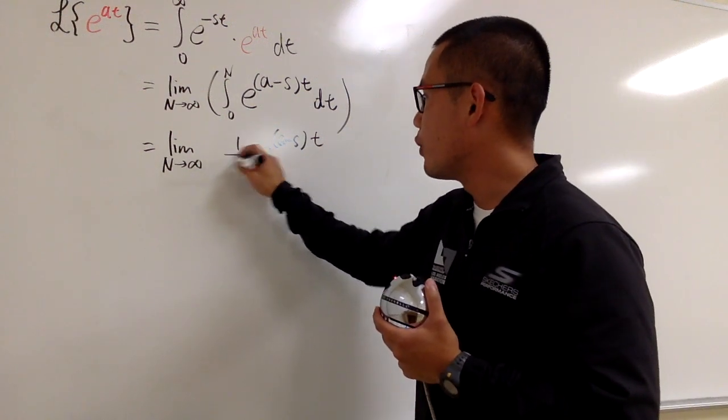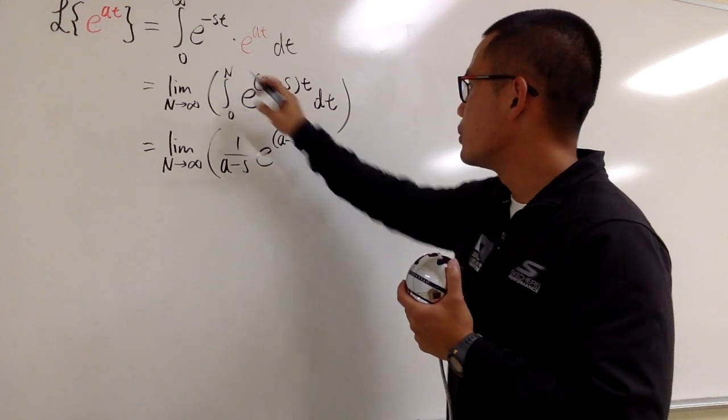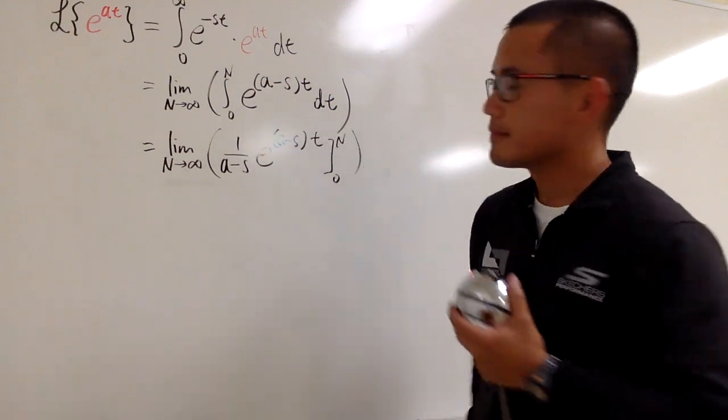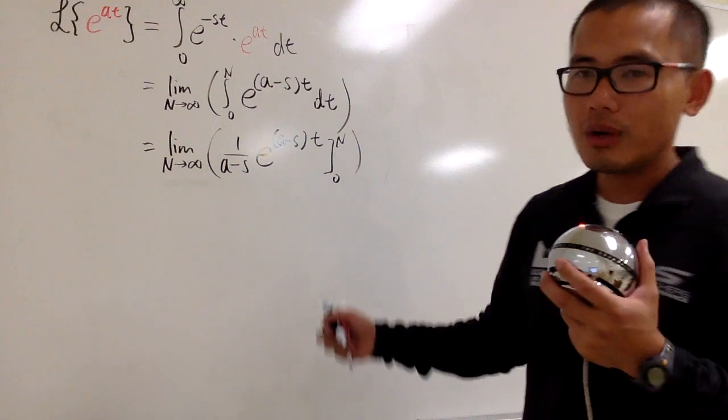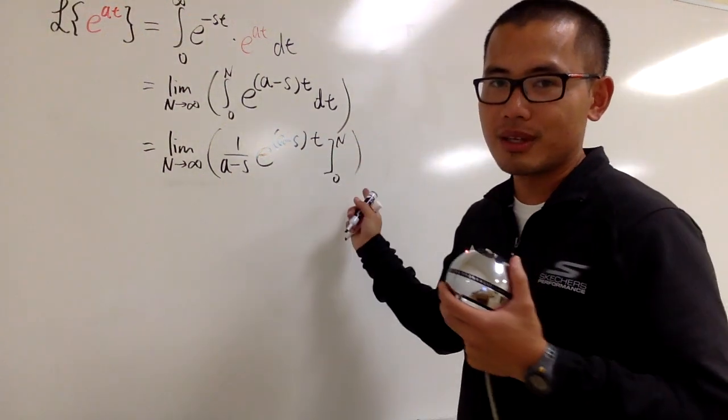And then we go from 0 to n. The usual deal, I will have to plug in n into all the t, and then subtract it, plug 0 into the t.